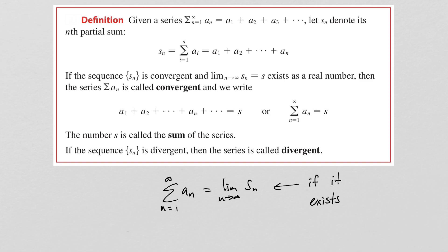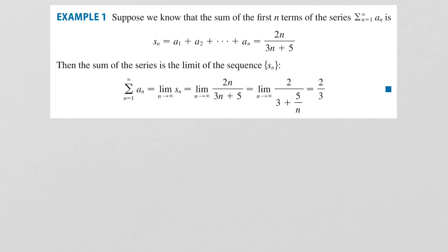If the limit exists, we say the series is convergent; if it does not exist, we say the series is divergent. As a basic example, suppose we know the sum of the first n terms is S_n = 2n over 3n plus 5. Then the sum of the series is the limit as n goes to infinity of 2n over 3n plus 5. Using basic limit techniques, this limit is 2/3, and therefore the sum of the series is also 2/3. If we have a formula for the nth partial sum, it is very easy to find the sum of the series — the problem is we don't normally know that formula.